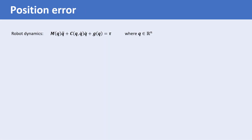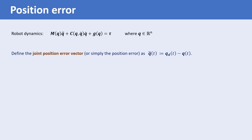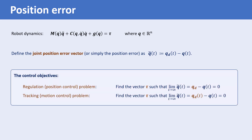A typical approach to analyze the stability of a nonlinear system or to design a controller for a nonlinear system is to first rewrite the closed-loop system such that the origin is an equilibrium point, and then analyze the stability of the origin. For such purposes, it is convenient to define a joint position error vector Q-tilde of T equals Q sub D of T minus Q of T. The control objective is to find tau such that the limit of Q-tilde of T as T goes to infinity equals zero.